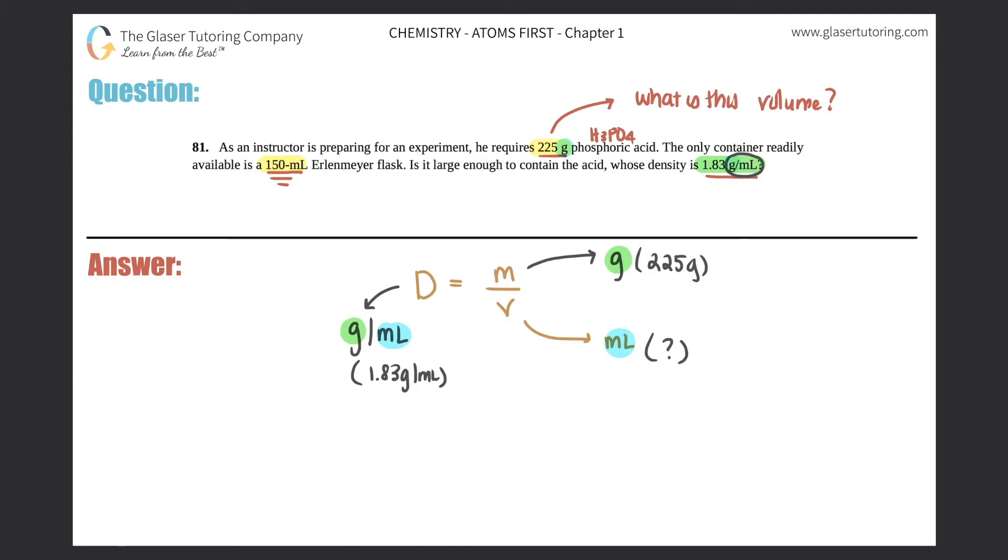So D equals M over V. We have 1.83 equals 225 over X. This is a cross multiplication because this is technically over 1, so 225 equals 1.83X. Now we just have to get X by itself. Divide by 1.83 on both sides. This will cancel.